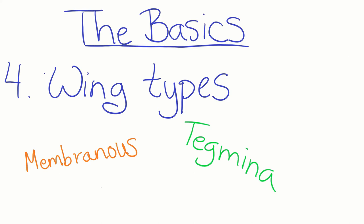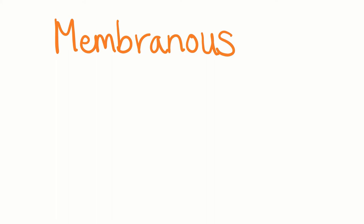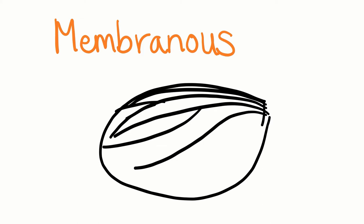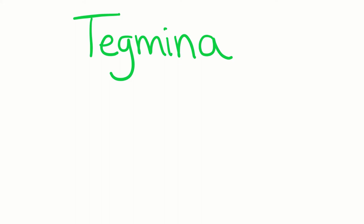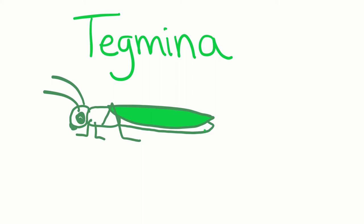Membranous wings are generally clear and you can see the wing venation — this is the most common wing type. You can think of the wings of a wasp or fly. Tegmena are leathery front wings. These wings are opaque and generally green or brown. Their job is to protect a pair of membranous wings underneath them. You can think of grasshoppers, praying mantids, or cockroaches.